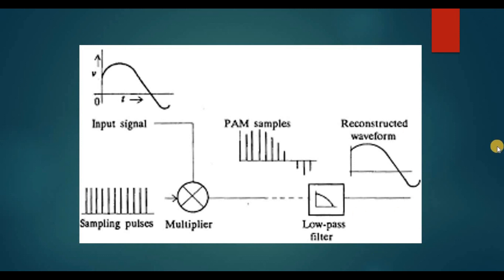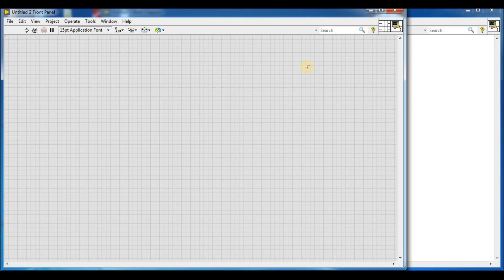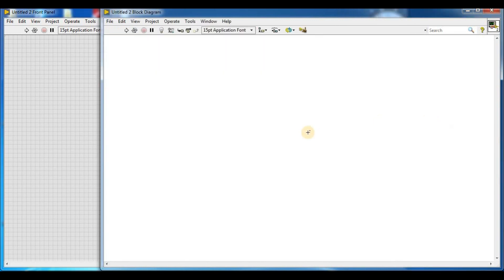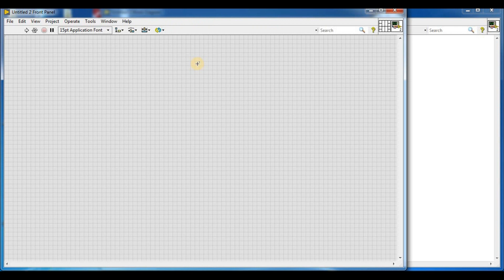The input signal goes to the multiplier or AND gate, and then the sampling signal goes to the second input of the AND gate. We then filter the PAM signal through a low-pass filter to receive our waveform. Now we are going to LabVIEW, and here we are in the LabVIEW front panel and block diagram.